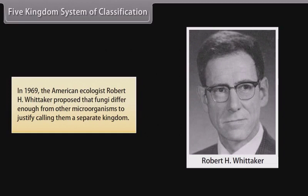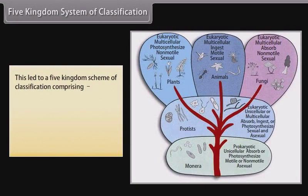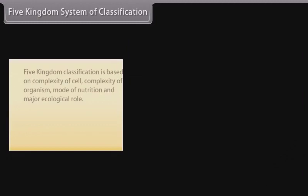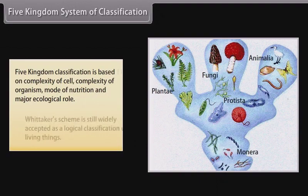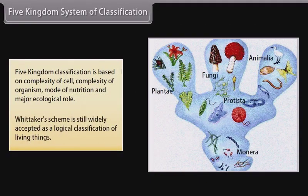Five kingdom system of classification: in 1969, American ecologist Robert H. Whittaker proposed that fungi differ enough from other microorganisms to justify calling them a separate kingdom. This led to a five kingdom scheme comprising Monera, Protista, Fungi, Plantae, and Animalia. Five kingdom classification is based on complexity of cell, complexity of organism, mode of nutrition, and major ecological role. Whittaker's scheme is still widely accepted as a logical classification of living things.